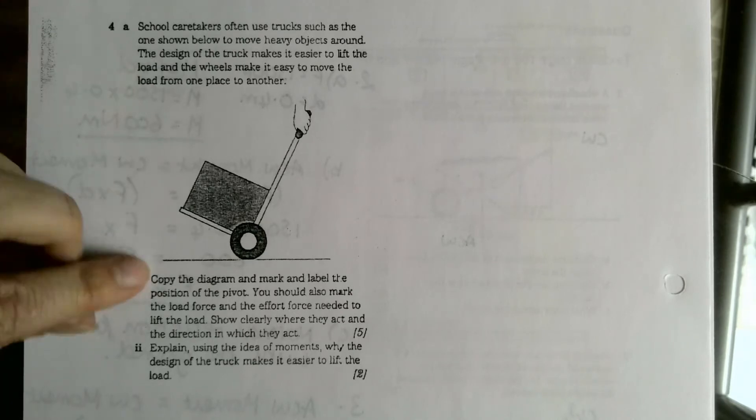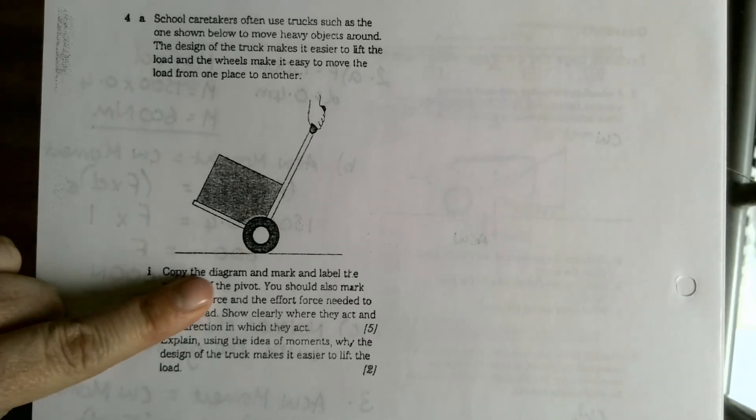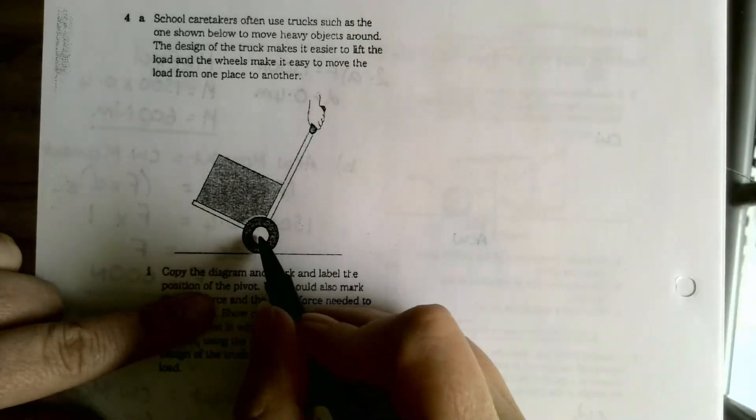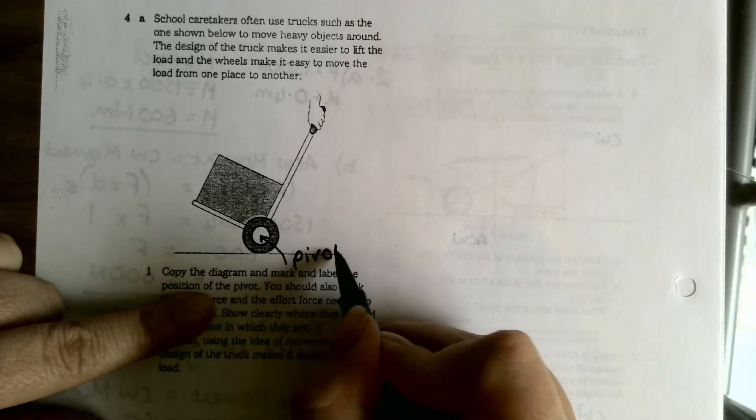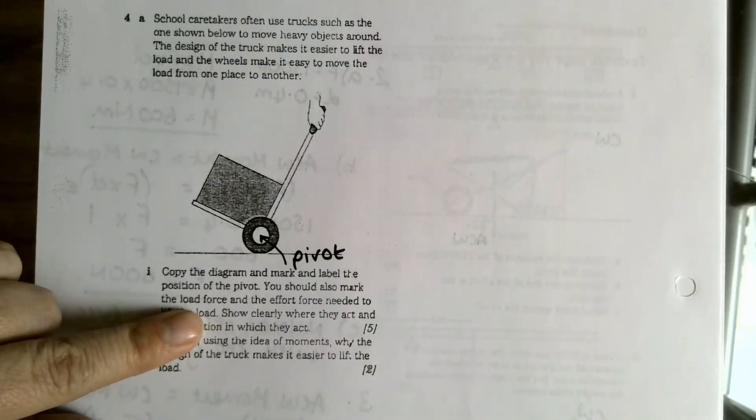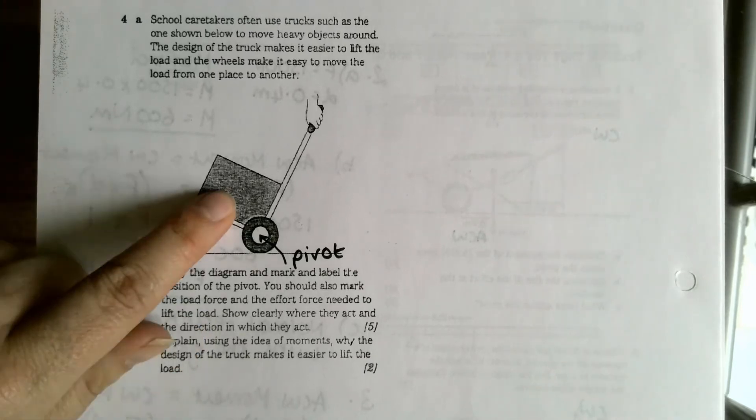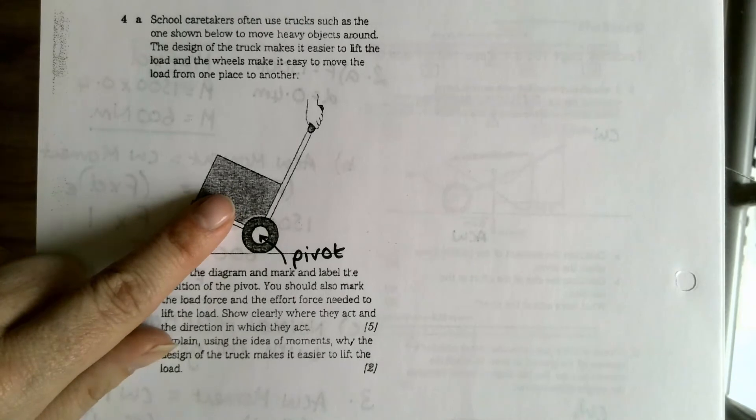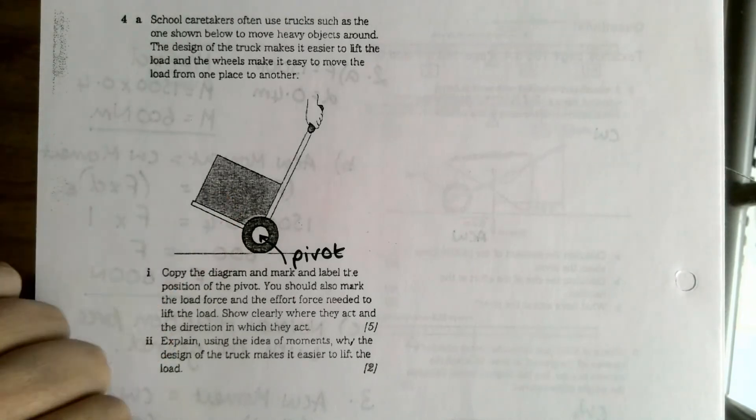School caretakers often use trucks such as the one shown below to move heavy objects around. The design of the truck makes it easier to lift the load and the wheels make it easy to move the load from one place to another. Copy the diagram, we don't have to, we already have it. Mark and label the position of the pivot. So the pivot is going to be here.